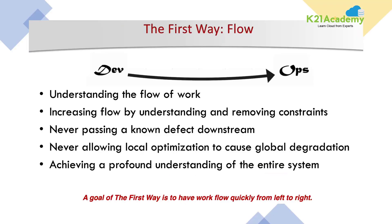Let's look at the first way in detail. The first way — systems thinking, or flow — means you should understand the flow of work and remove the constraints. You should think from a systems perspective and remove unwanted constraints or dependencies from the system.